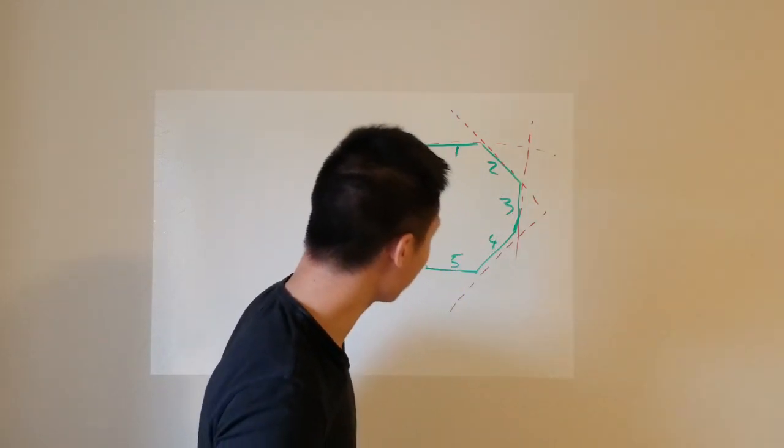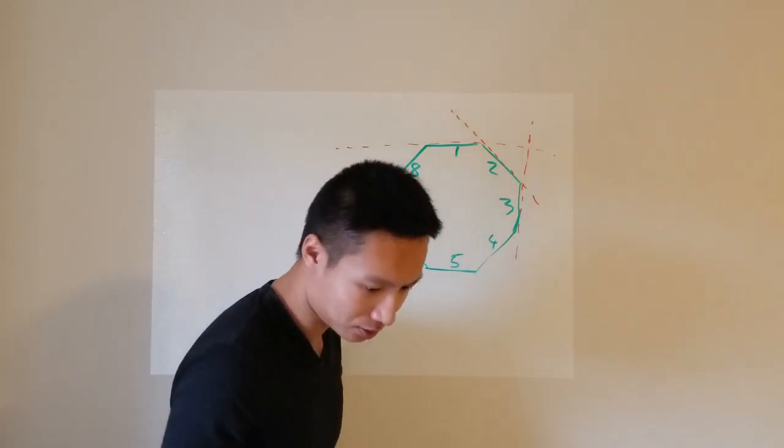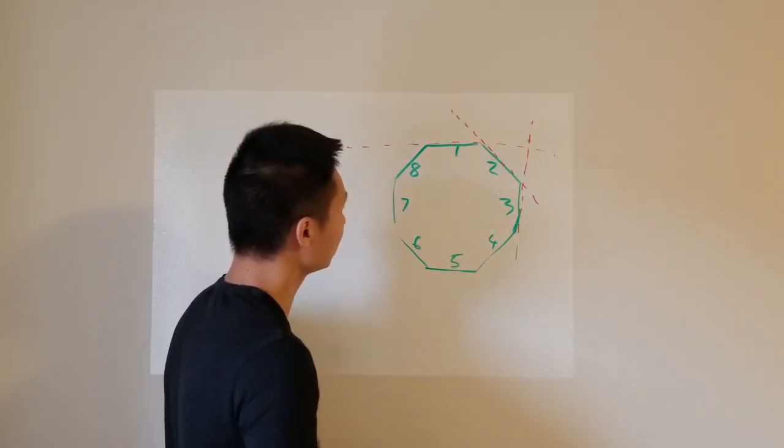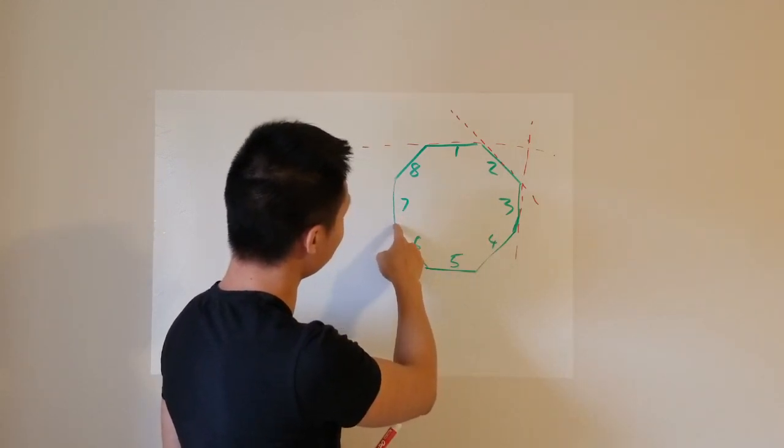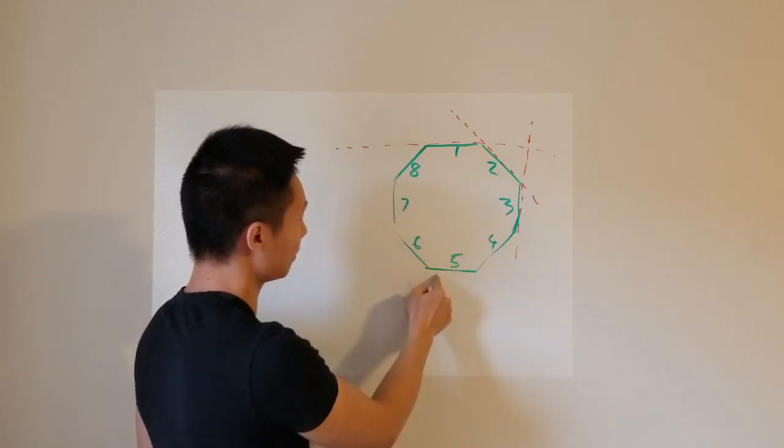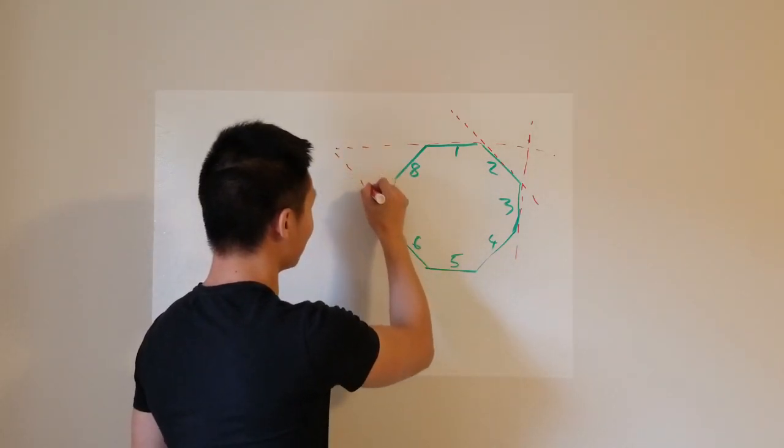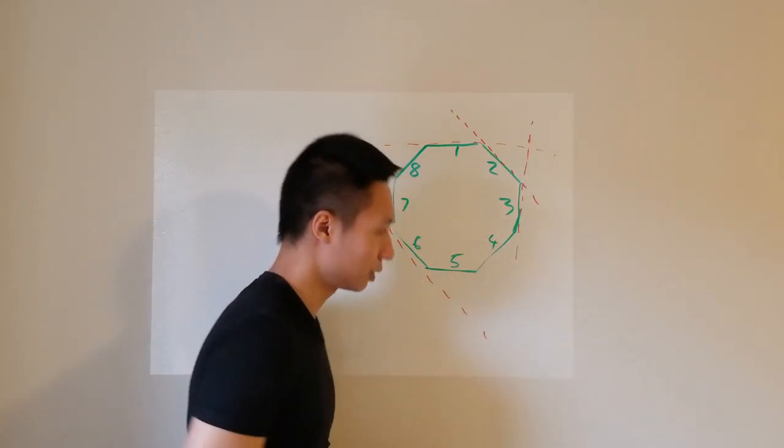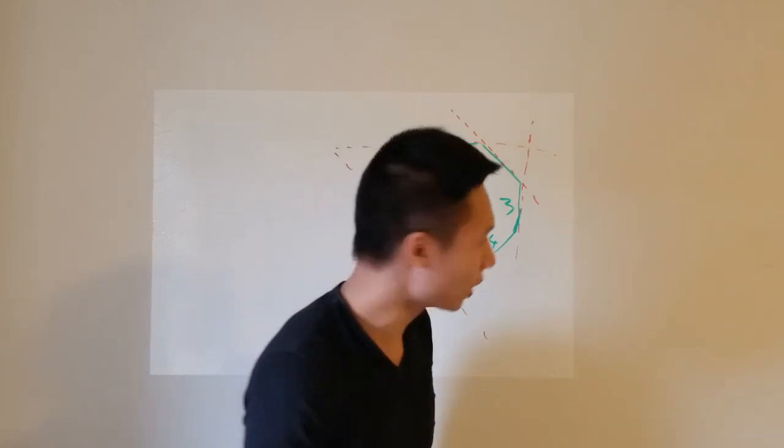Now suppose I have 3 sides together, at least not giving you a chance to close this off. So if 1, 2, 3 are chosen, you can't choose 7 because then it's parallel to 3, you cannot choose 5 because it's parallel to 1, then the only choice is really number 6. Then this will make sure that the 4 sides close off.